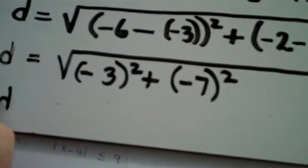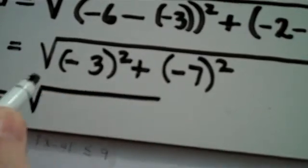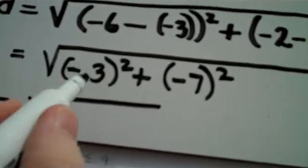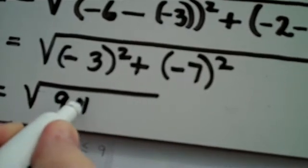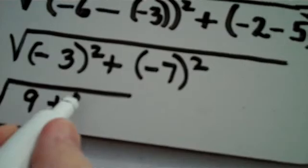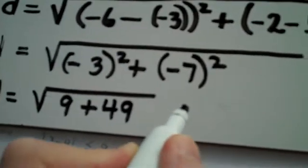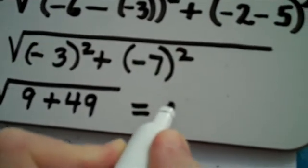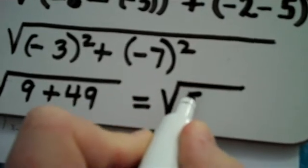Notice we still have the radical. Negative 3 quantity squared is 9. Negative 7 quantity squared is 49. And this becomes the square root of 58.